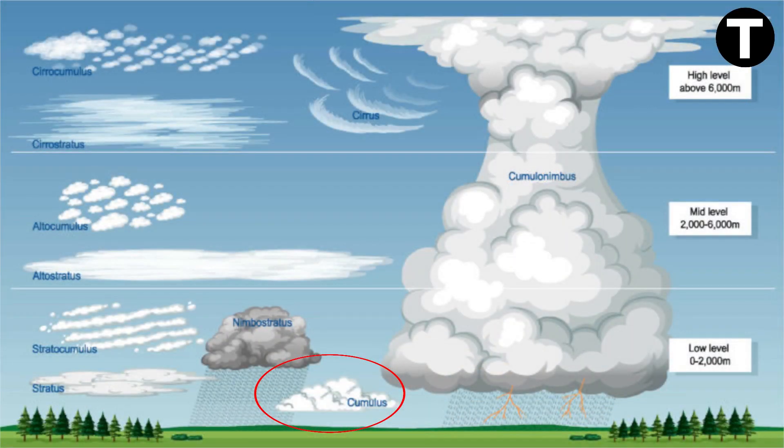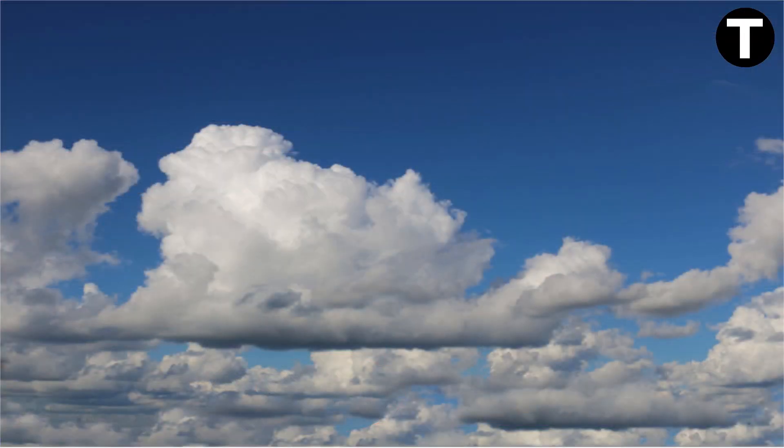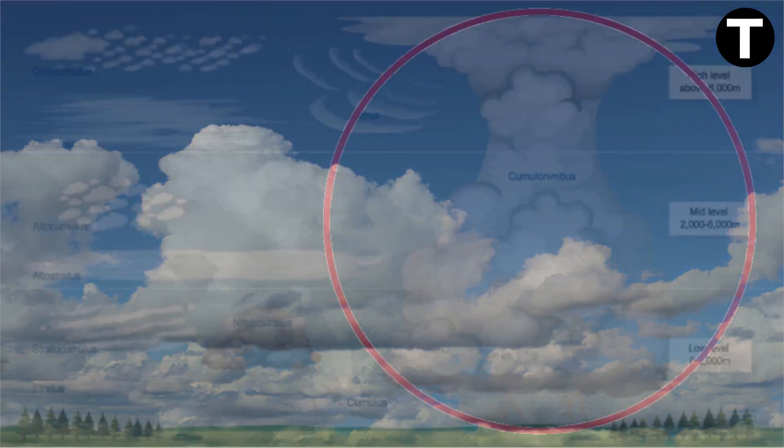Cumulus clouds are those classic cauliflower-shaped formations. They're loose and dense, usually appearing during convection after disturbances.